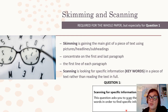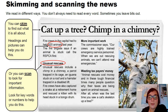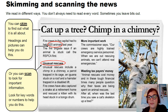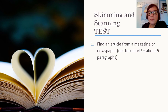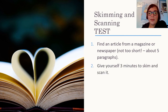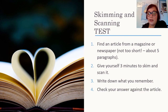There you can see what question 1 is asking you to do. Here's a newspaper article where they've indicated skimming and scanning, just to make it very easy to identify. Now, here's a little skimming and scanning test. Find an article from a magazine or a newspaper — not too short. You can use the previous one, but it's better to use another one. Give yourself three minutes to skim and scan it, write down what you remember, and then check your answers against the text. Pause the recording and do this exercise, then come back when you're ready.